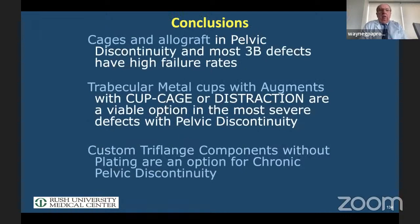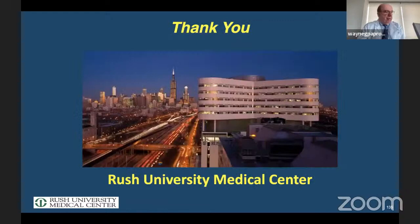In conclusion: cages and allografts are no longer recommended for 3B cases. Trabecular metal cups with augments, plus or minus a half cage, with or without distraction — almost always distraction — or a tri-flange cup as your other choice. Thank you very much for your attention.